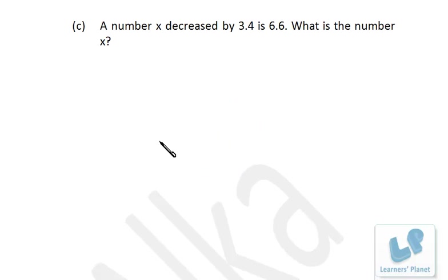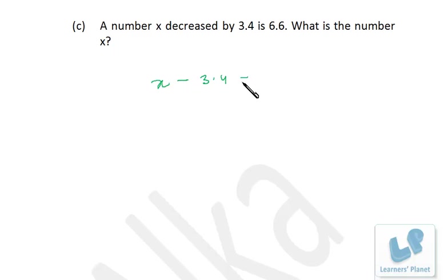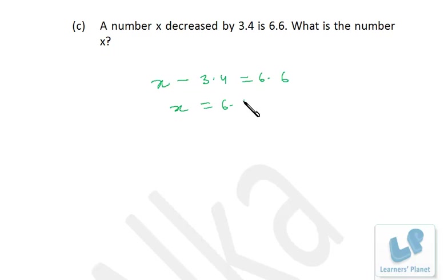A number x decreased by 3.4 is 6.6. What is x? Simply take 3.4 to the other side: x equals 6.6 plus 3.4, which is 10.